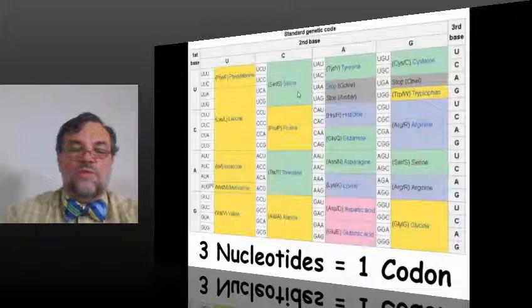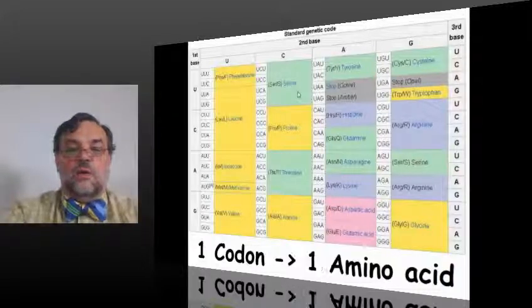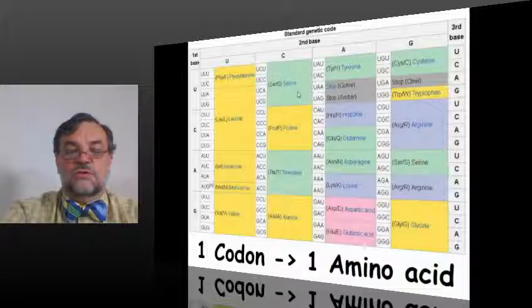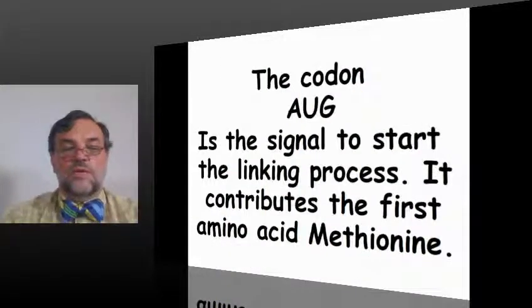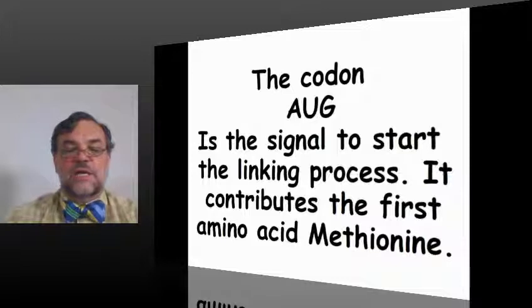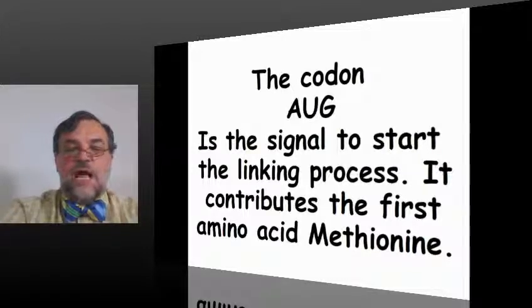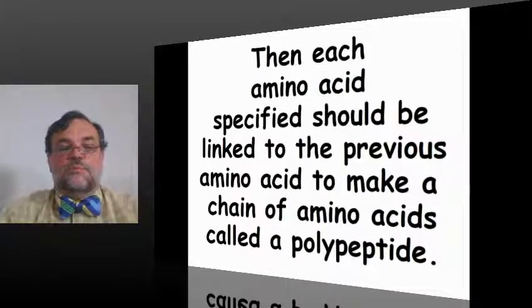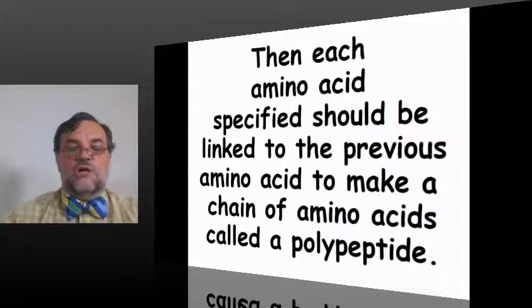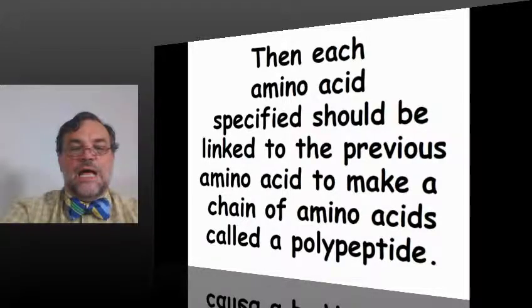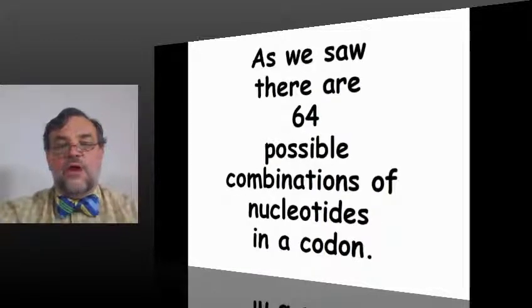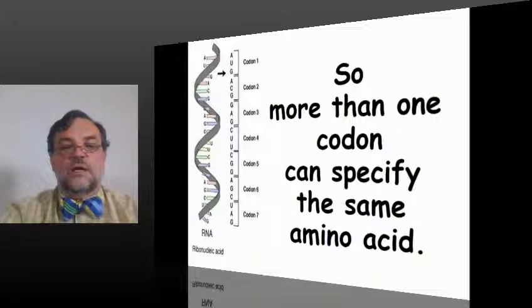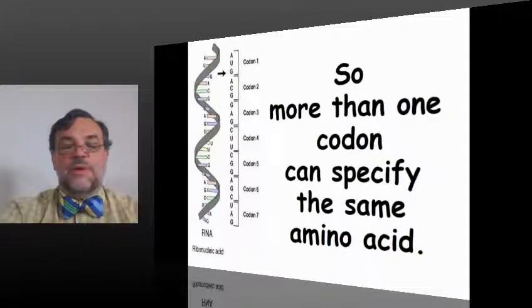Three nucleotides make a codon and one codon specifies which amino acid we're going to add. The codon AUG we start off with, and it's the signal to start the linking process. It contributes the first amino acid methionine. Then each amino acid specified should be linked to the previous amino acid to make a chain of amino acids called a polypeptide. There are only 20 different types of amino acids. As we saw, there are 64 possible combinations of nucleotides in a codon, so more than one codon can specify the same amino acid.